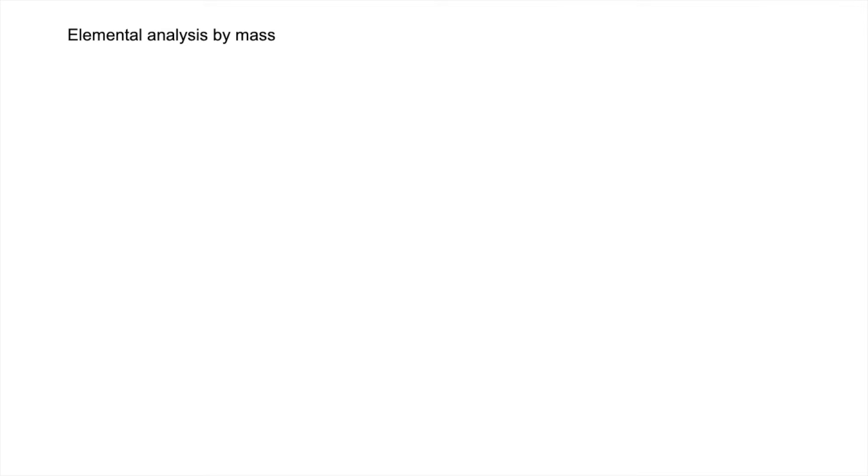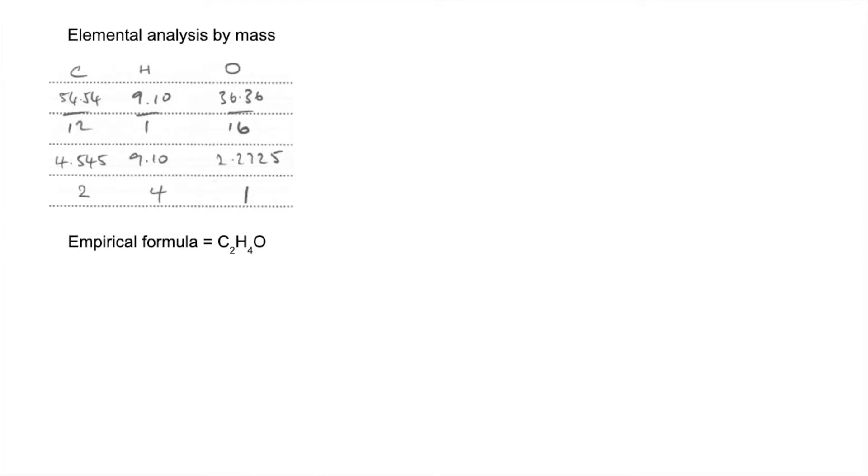So we'll start with the easy stuff. The elemental analysis by mass is basically just an empirical formula calculation. So we just put the percentages in, divide by the MR and we get the mole ratio, divide by the smallest and that gives us the simplest whole number ratio of 2 to 4 to 1. So that tells us that the empirical formula is C2H4O. So we work out the MR of that, comes out at 44.